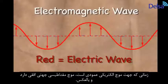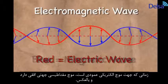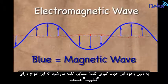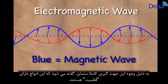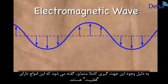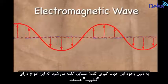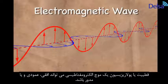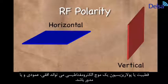Whenever the electric wave is oriented vertically, the magnetic wave is oriented horizontally, and vice versa. Because the electromagnetic waves have a distinct orientation, they are said to be polarized. The polarity of an RF signal can be horizontal, vertical, or even circular.